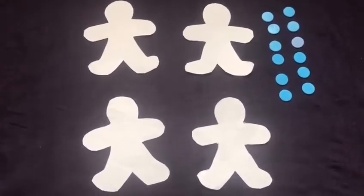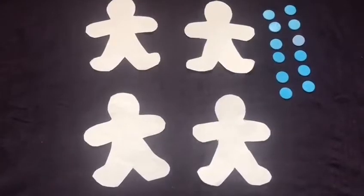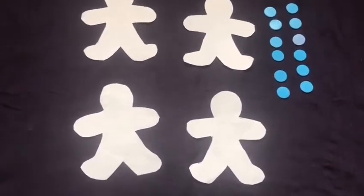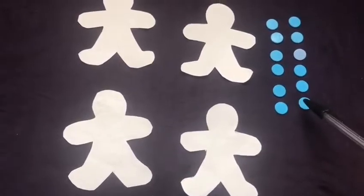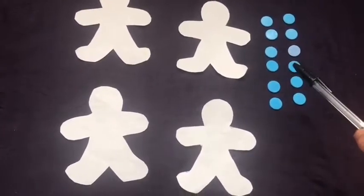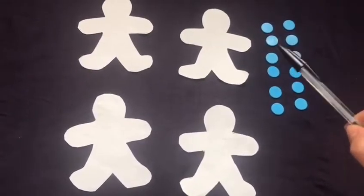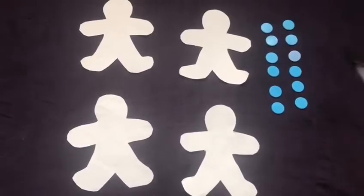So let's count how many spots we have and how we should share this out between four people equally. So let's count. We've got 1, 2, 3, 4, 5, 6, 7, 8, 9, 10, 11 and 12.